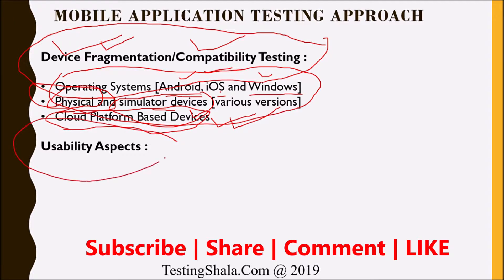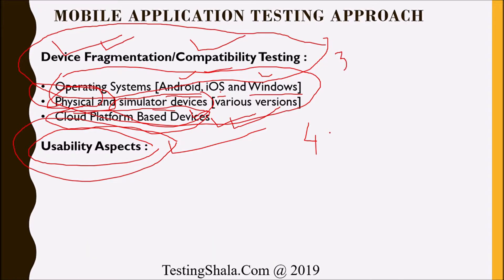The next type of testing is usability testing — this is the fourth testing approach in mobile app testing. For usability testing, there are standard guidelines framed for mobile applications. As a tester, you should clearly follow those usability guidelines to ensure nothing is broken from a usability perspective. You should also check how the different layouts look.